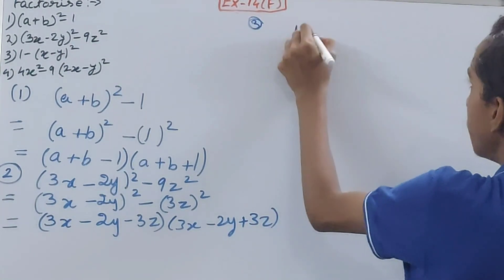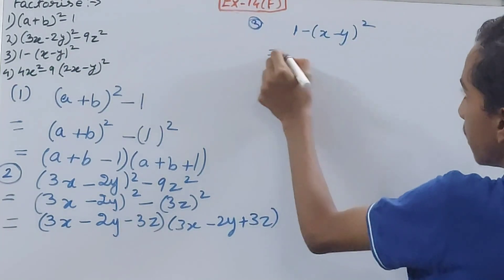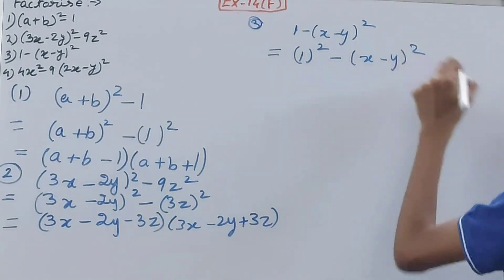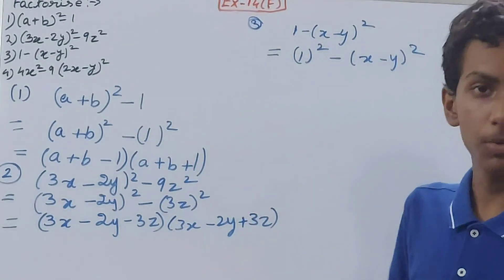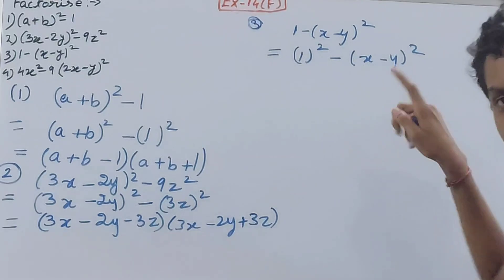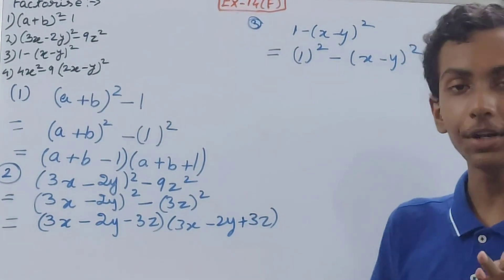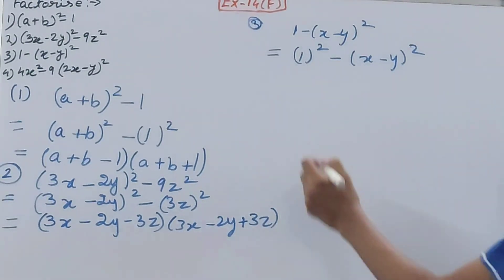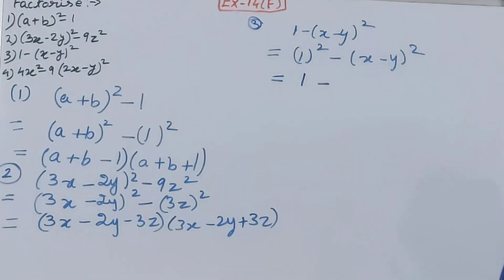The third question is 1 - (x - y)². You can write 1 as 1² and keep (x - y)² as it is — do not open it using the a - b whole square identity, or your entire answer will become wrong.